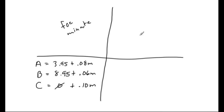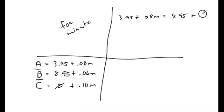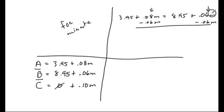They ask us in number one: at what number of minutes do plans A and B cost the same? For A, I'm going to use its equation: $3.95 + 0.08m, and make that equal to plan B, which is $8.95 + 0.06m. I have an equation with variables on both sides — there's no distributive property, no combining like terms. So I move the 0.06m over by subtracting 0.06m from both sides. Those cancel, and I'm left with $3.95 + 0.02m = $8.95.